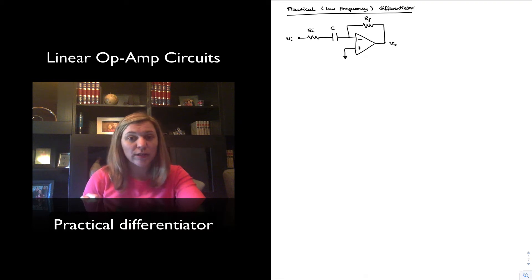As we analyze the circuit, we'll see that the addition of this resistor is going to prevent those limitations of the ideal differentiator, namely the unbounded amplification of high frequency noise.